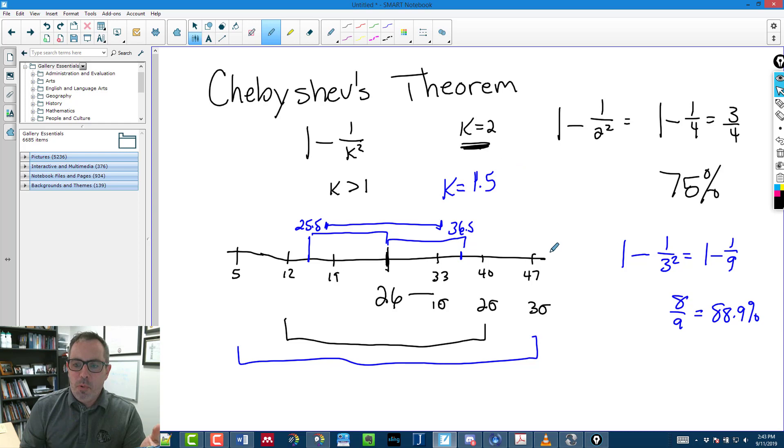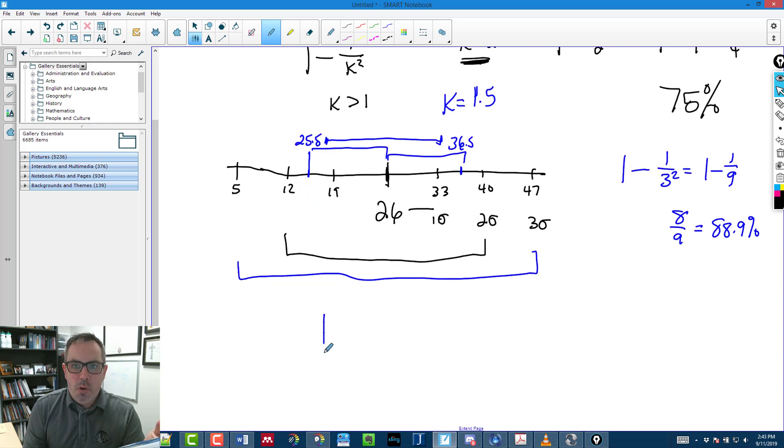If I want to know what percent of people lie between those two scores, I am simply going to put the 1.5 into Chebyshev's theorem and say 1 minus 1 over 1.5 squared. Or, 1.5 squared is 1 minus 1 over 2.25. And I'll just do this in a calculator.